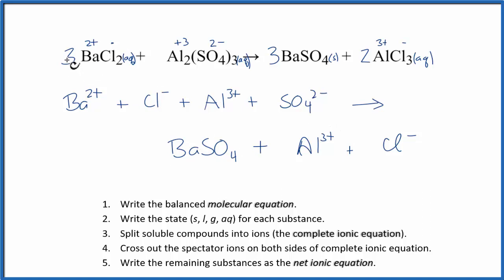We do need to take into account the coefficients and the subscripts. We have three Ba²⁺, the barium ions. Then the chlorine, we have two times the three, six chloride ions. Aluminum sulfate, we have three of these sulfate ions.